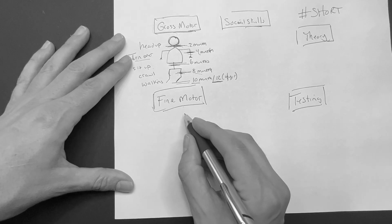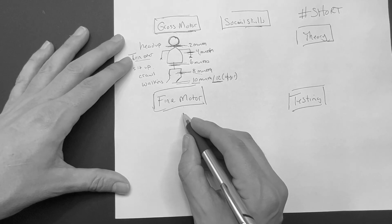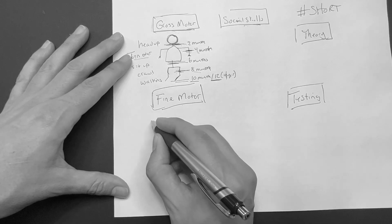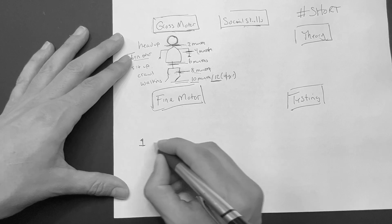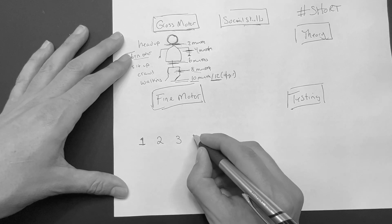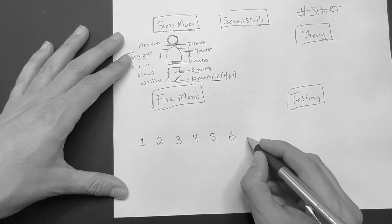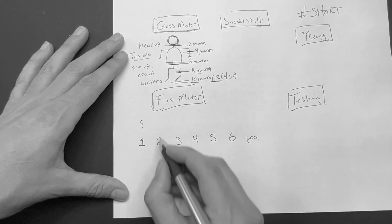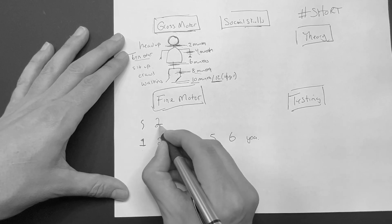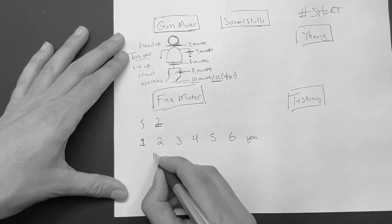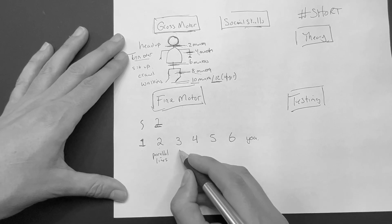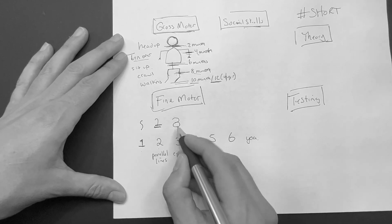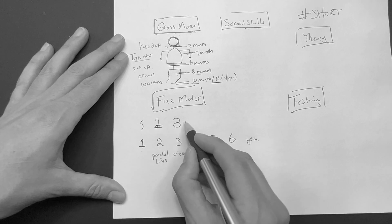When it comes to fine motor skills, there's actually an easier way to learn this. We're going to go 1, 2, 3, 4, 5, and 6 — and this is years of age. At 1, you should be able to draw a squiggly line. For 2, draw the number 2 — it looks like parallel lines at the bottom, so at 2 years a child should be able to draw parallel lines. At 3, when you draw the 3, continue it at the bottom to make a circle — so at 3 years they can draw a circle.